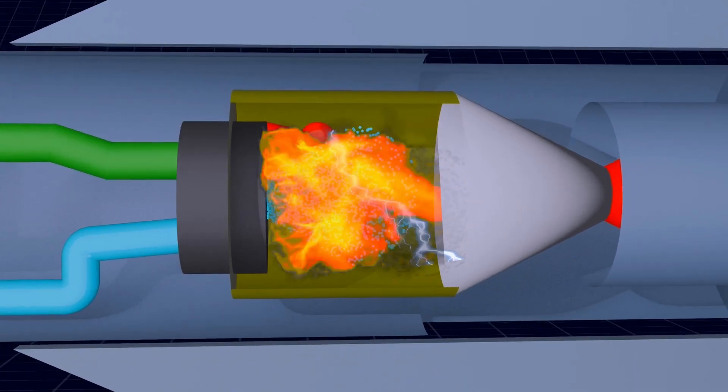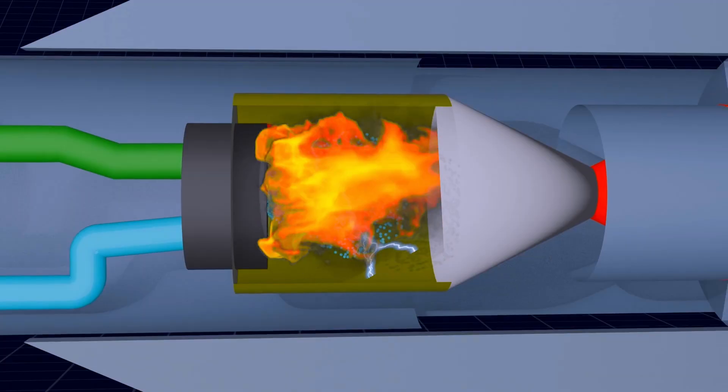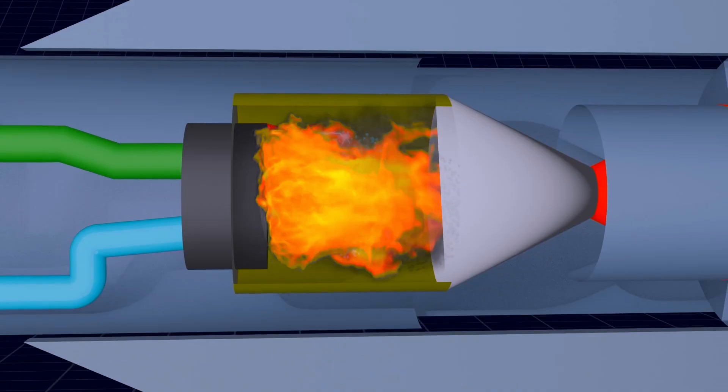But saying ignite alone would be too simple. In reality, the combination of fuel, oxidizer, and the high-voltage spark creates a controlled blast. It's almost like a bomb, but it is carefully controlled. This makes the fuel start burning. And then, inside the combustion chamber, very high temperature and high-pressure gas is produced.